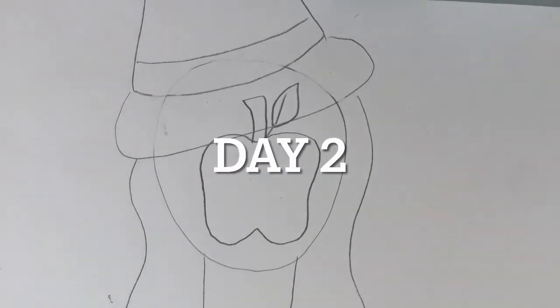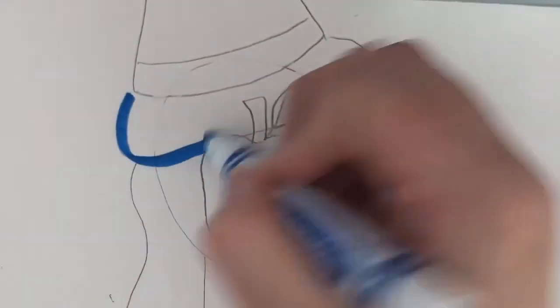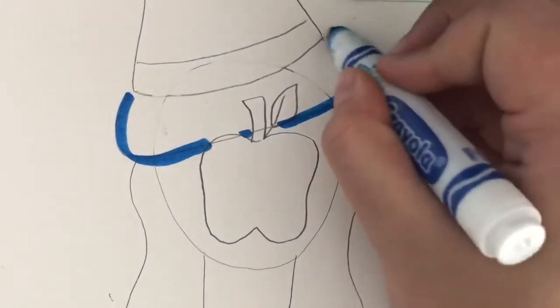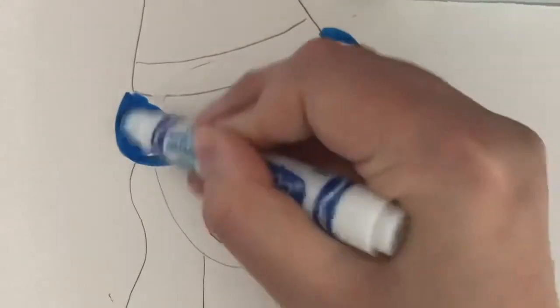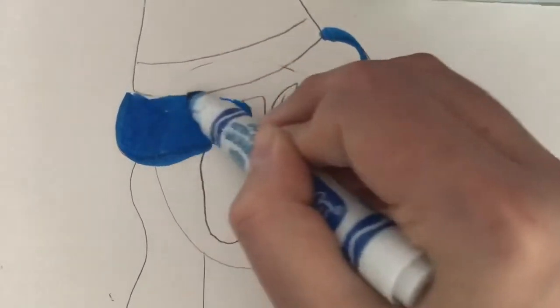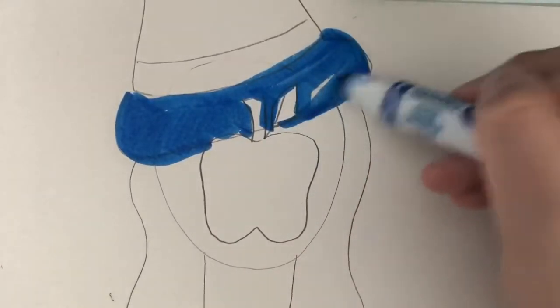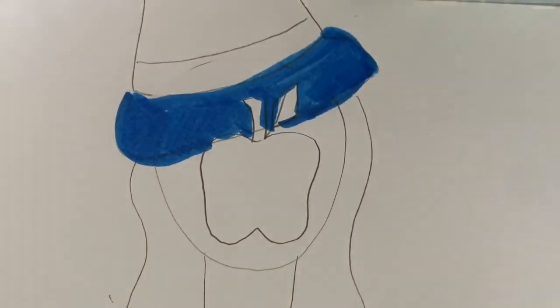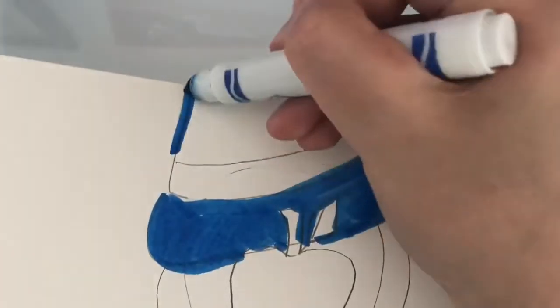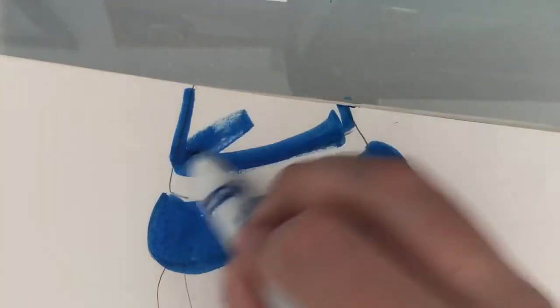So I am just going to color in my hat and my apple and everything in. And I'm also going to make sure that I color in my background. So just like my other picture that I had before, I'm using markers. If you have crayons, you can use those. If you have colored pencils, you guys can use those. It's kind of up to you telling me what you want to use for the colors.